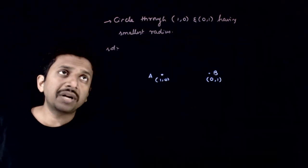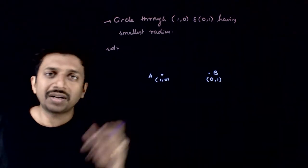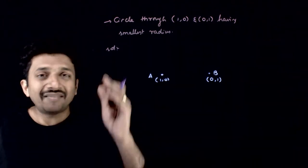Welcome students. In this question you are asked to find the equation of a circle passing through the points (1,0) and (0,1) and having the smallest radius.